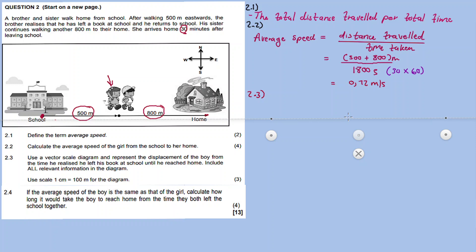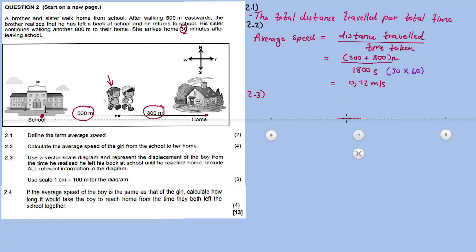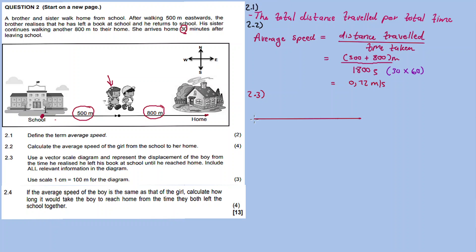Right, so the boy — from the moment he realized — you see where the school is. So 1 centimeter represents 100 meters. Then another 10 centimeters: 100, 200, 300, 400, 500 meters. So we draw the vector here. This is school, and this is home. From school going east to the point where he turned around.